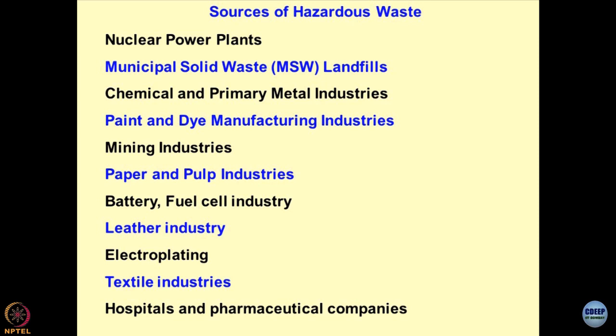Nuclear power plants I have discussed in detail; MSW I have also covered. For chemical and primary metal industries, the sludge is ultimately the issue. For paint and dye manufacturing, read on the internet how these industries got affected because of NGT or Supreme Court or High Court orders. The judiciary gets involved directly because they control the laws of the land — including that you must behave in a manner that nobody else gets affected by your activities.